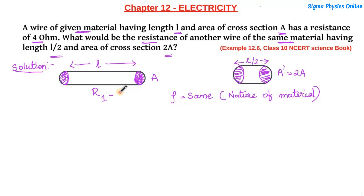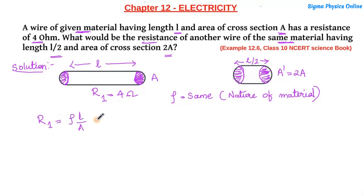The resistance of the first wire is R1 = 4 ohm. The formula for resistance is given by R1 = ρl/A, and this value is given as 4 ohm — that is, the resistance of the wire with length l and area of cross section a is 4 ohm.